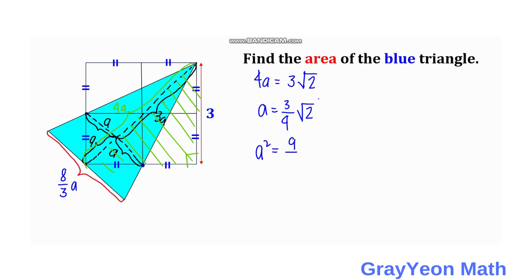So we have a squared is equal to 9 over 16 times 2, and we cancel this, so here comes 8, so a squared is equal to 9 over 8.